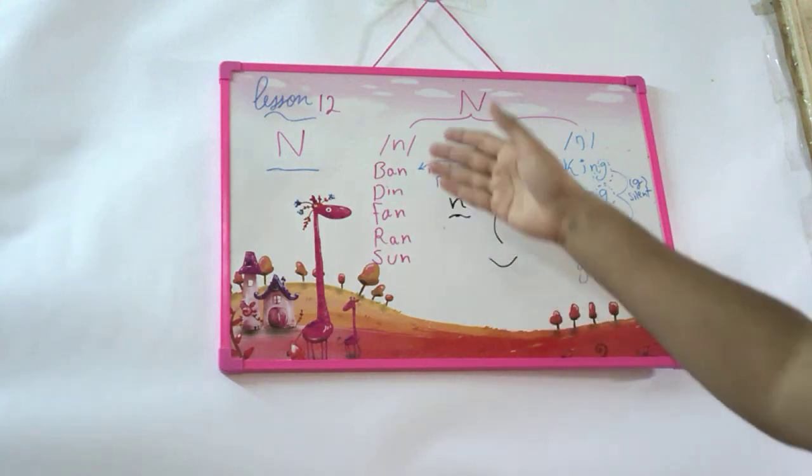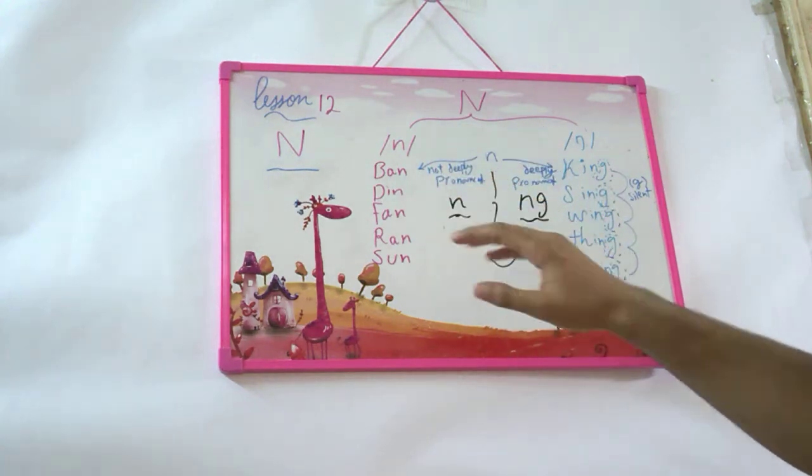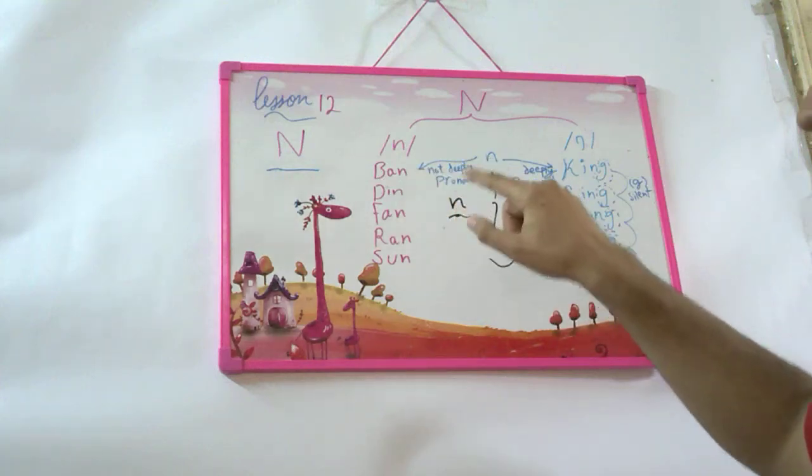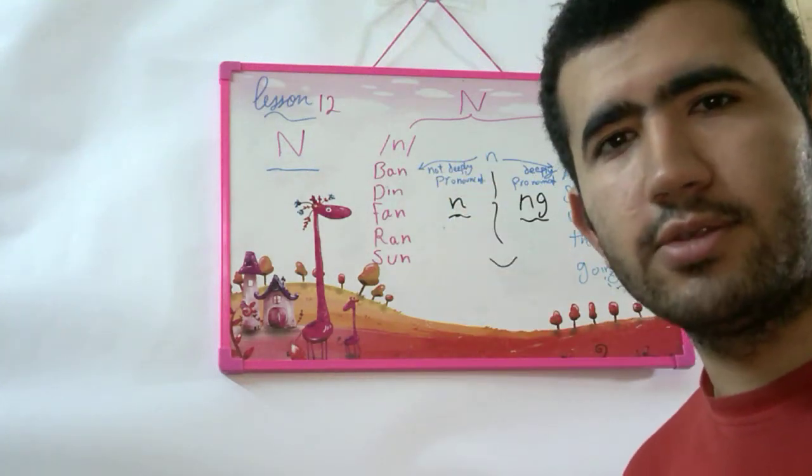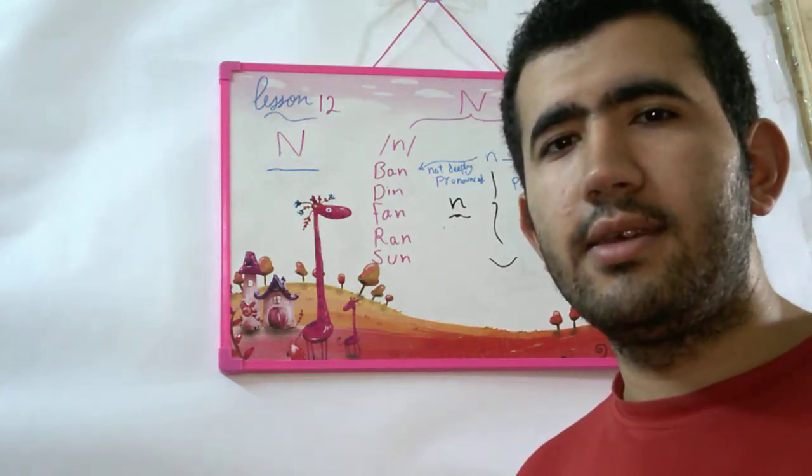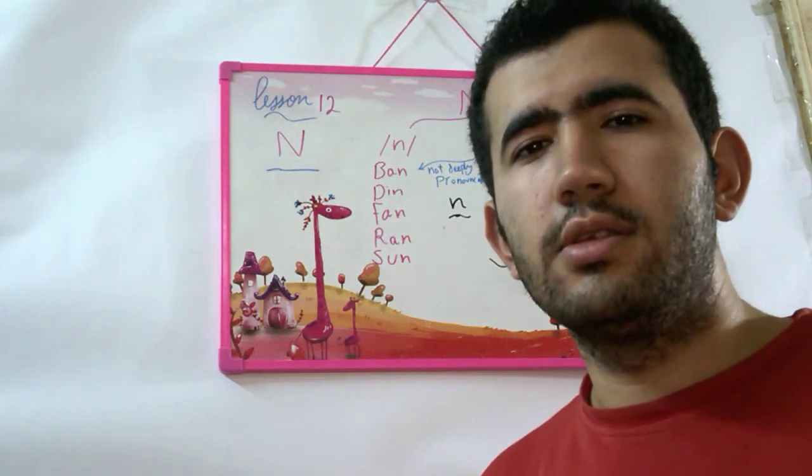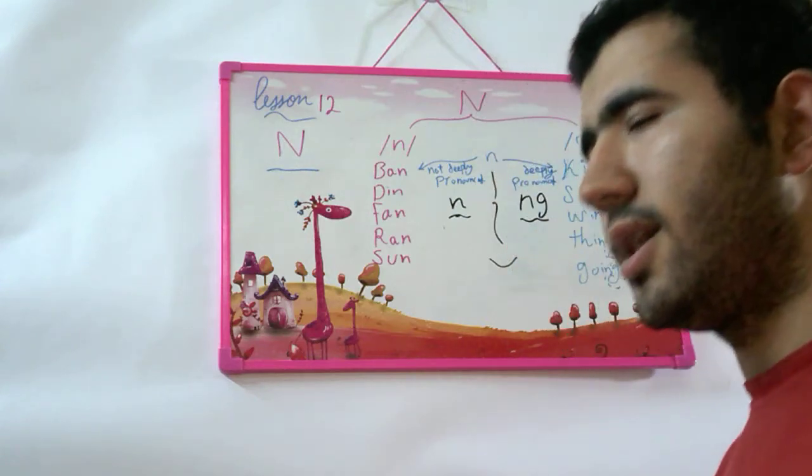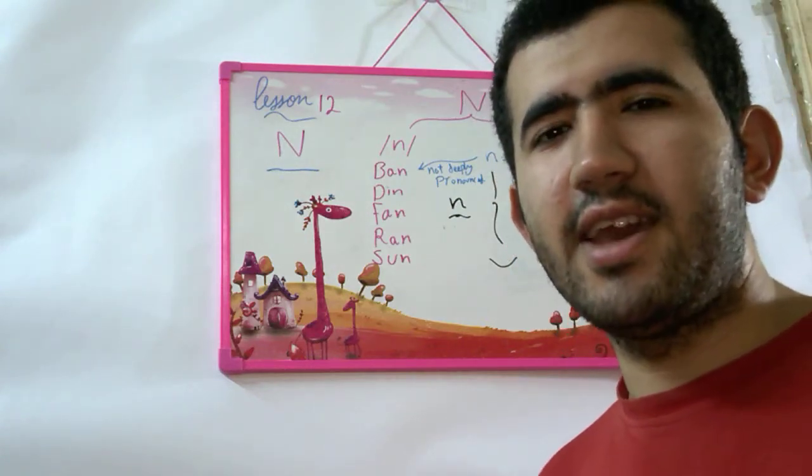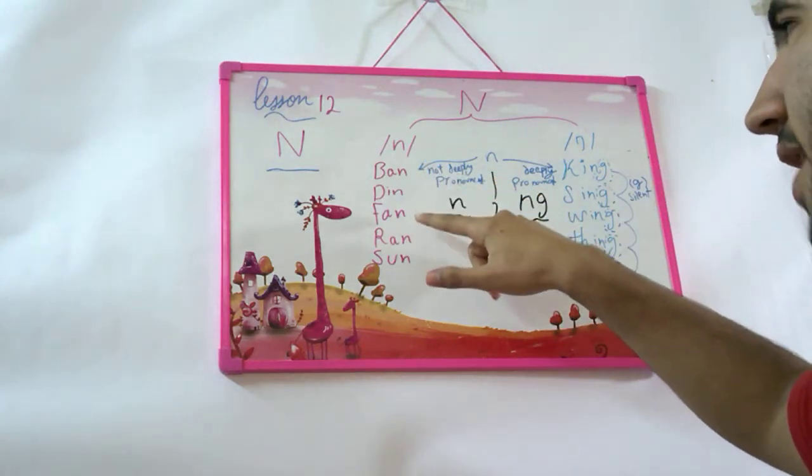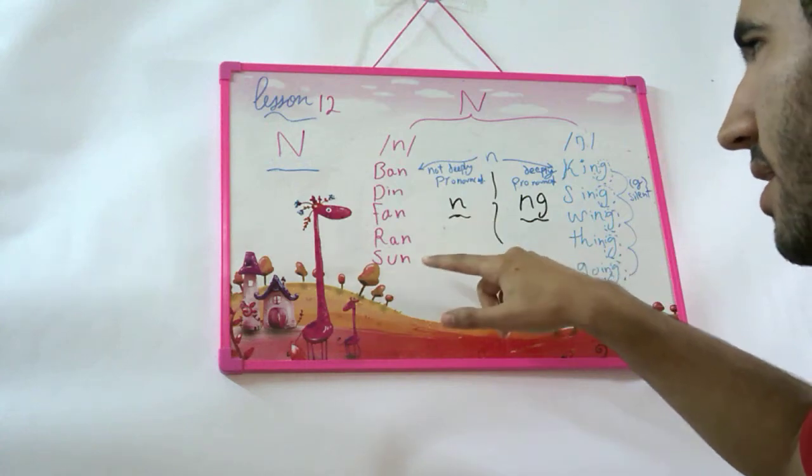Before we see these words, I would just want to say that this N is not deeply pronounced. What I mean by not deeply pronounced is it's N, not N. This is the difference between deeply and non-deeply. Like we could say not stressed that much. So we say ban, din, fan, ran, son.